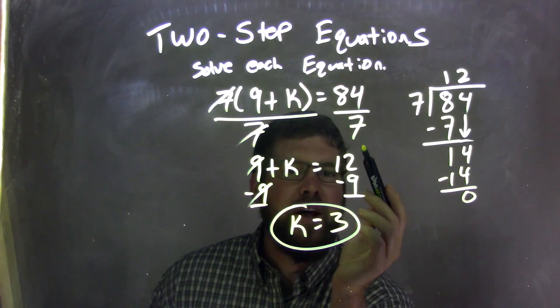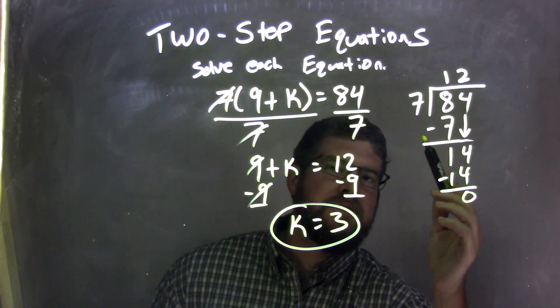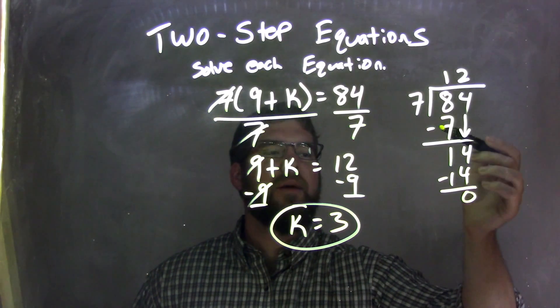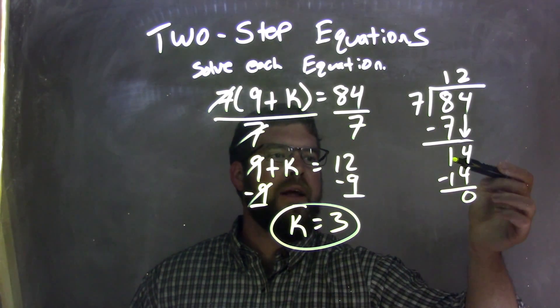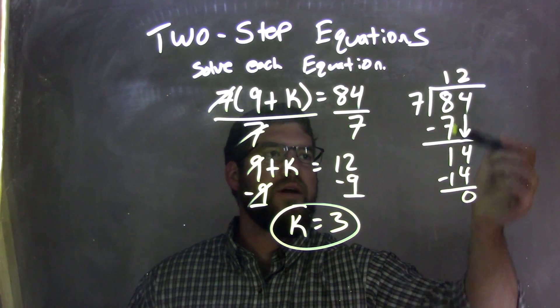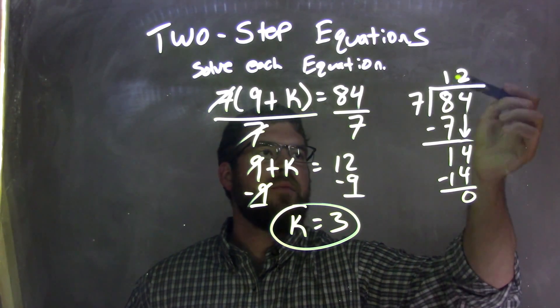Equals 84 divided by 7. Well, I use long division. 7 goes into 8 one time. 1 times 7 is 7. Subtract and bring down the other digit. 8 minus 7 is 1. Bring down the 4.